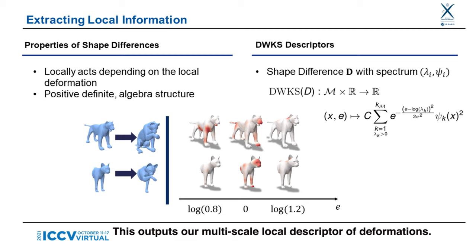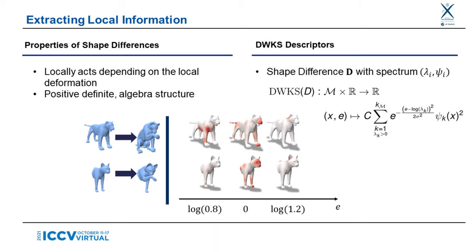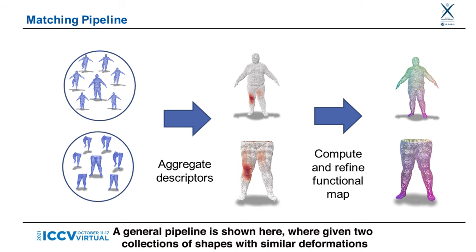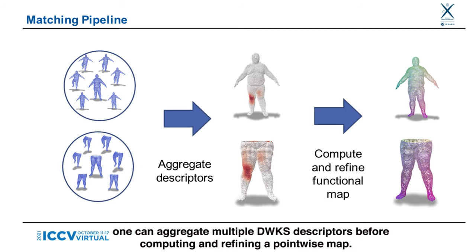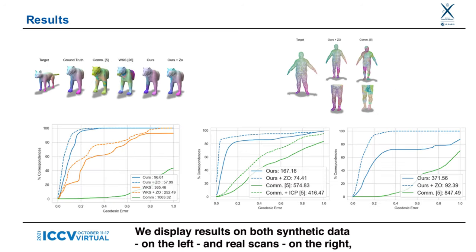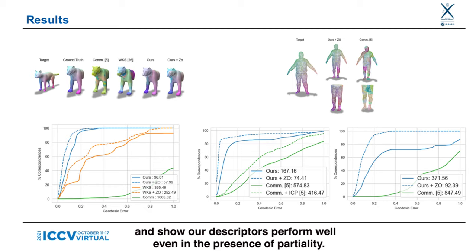This outputs our multiscale local descriptor of deformations. The image below shows the descriptor can remain stable across non-isometric shapes, even in the presence of partiality. DWKS can be used like any shape descriptor to perform shape correspondence. A general pipeline is shown here, where given two collections of shapes with similar deformations, like frames of a video, one can aggregate multiple DWKS descriptors before computing and refining a pointwise map. We display results on both synthetic data on the left and real scans on the right, and show that our descriptors perform well even in the presence of partiality.